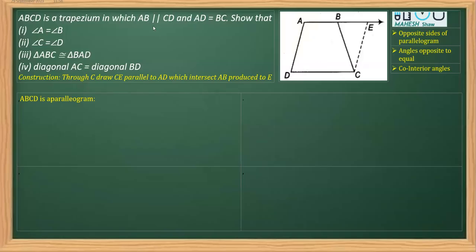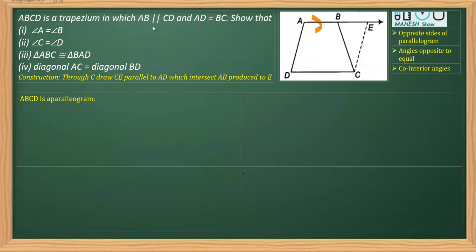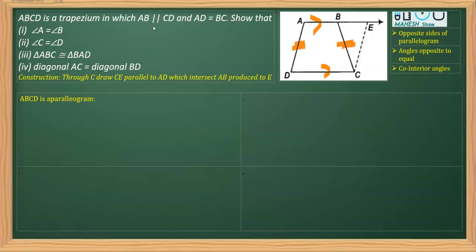Here I have taken one question from Chapter Quadrilateral, Class 9th textbook NCERT. It says ABCD is a trapezium with AB parallel to CD. As you can see in the figure, ABCD is a trapezium with parallel sides AB and DC. The non-parallel sides AD and BC are equal in length. As you know, in a trapezium one pair of opposite sides are parallel, and here it is an isosceles trapezium where the non-parallel sides are equal in length.